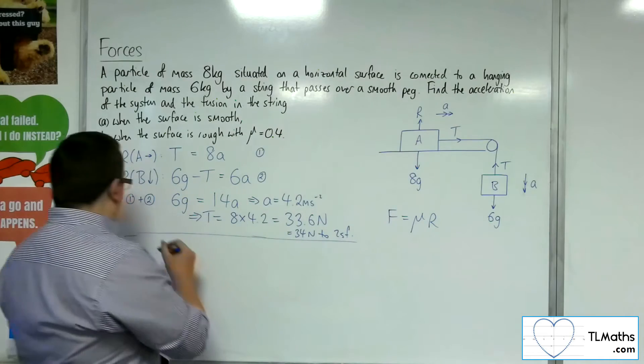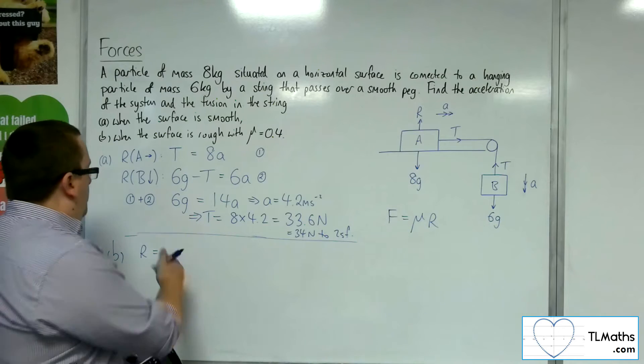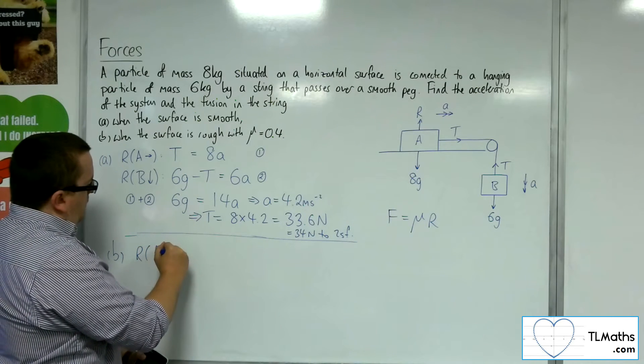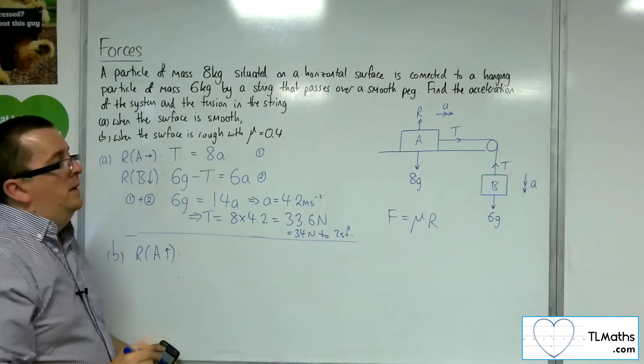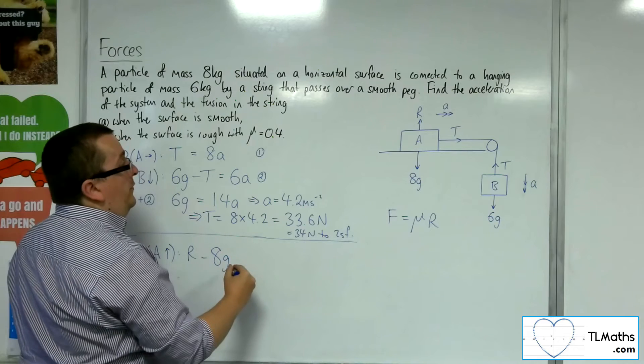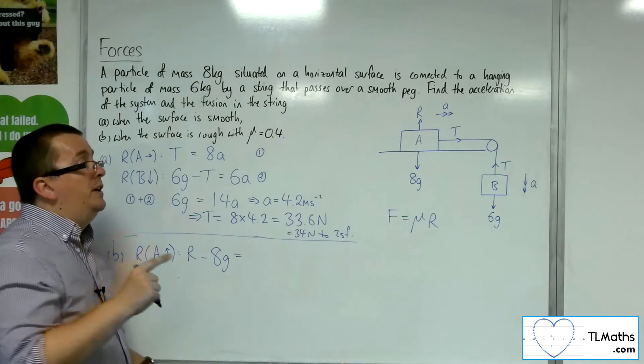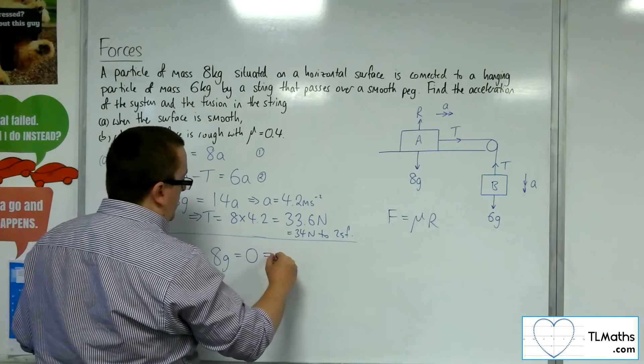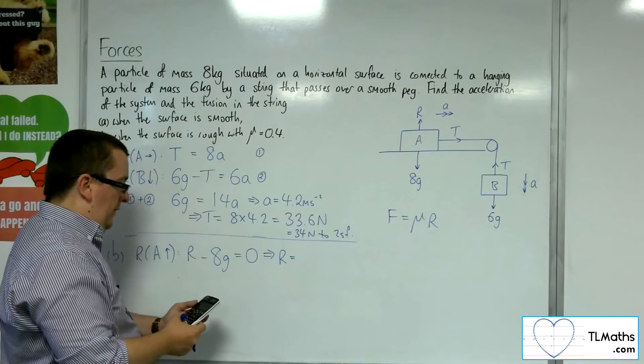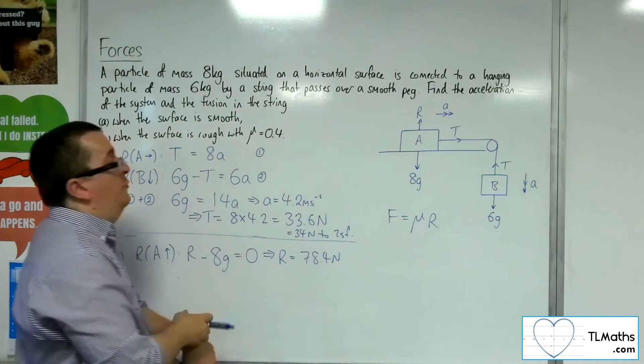Now, R, so that's the first thing we need to deal with. If we resolve A vertically, then we've got R pointing directly upwards, 8g working downwards. And that's got to be equal to mass times acceleration. But the particle A is not accelerating vertically, so it's just 0. So R is actually just equal to 8 lots of 9.8, which is 78.4 newtons.